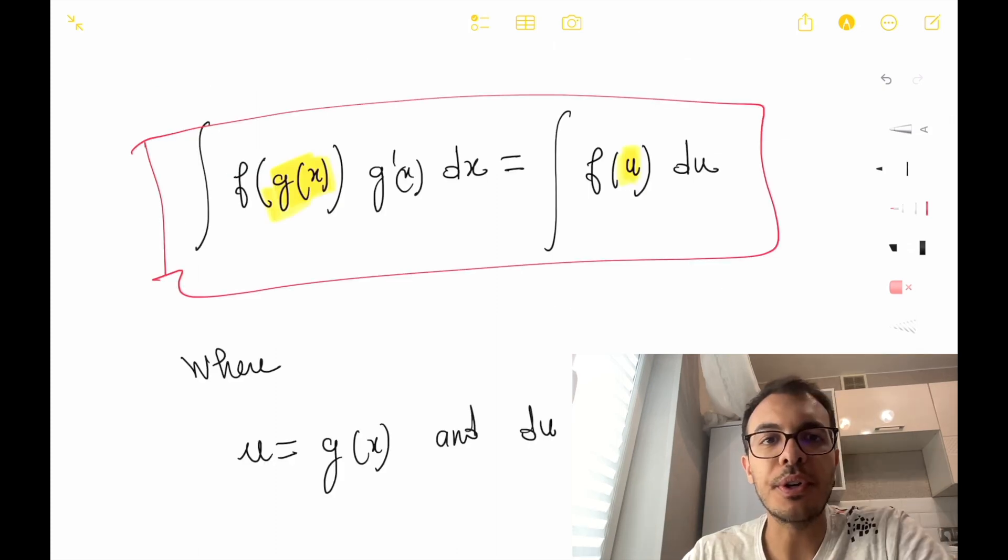Here is how it works. Suppose we have an integral that involves a complex expression. We choose a new variable u in such a way that it simplifies the integral.